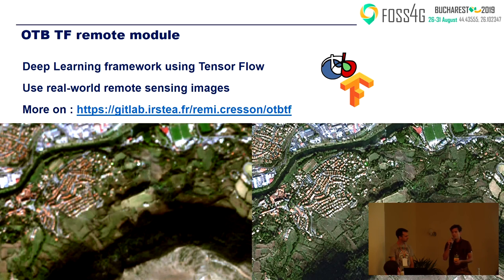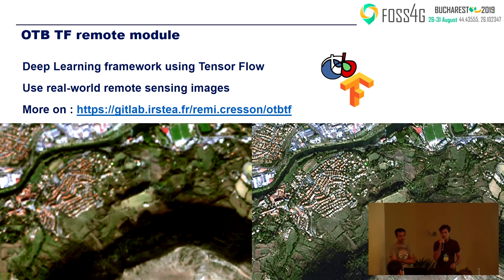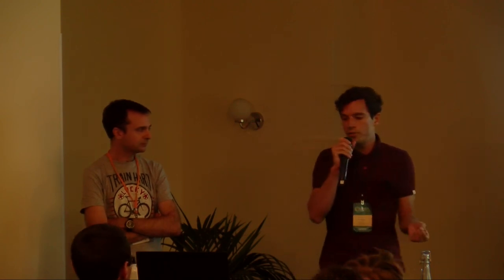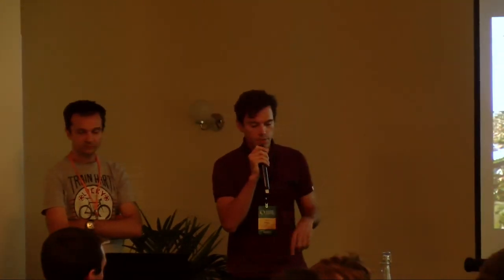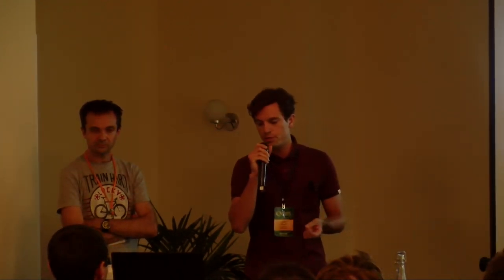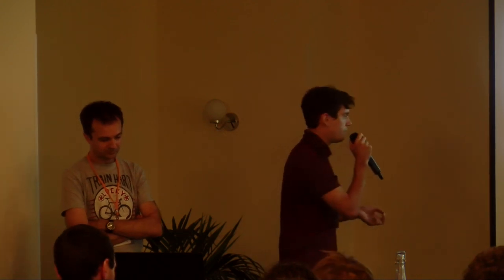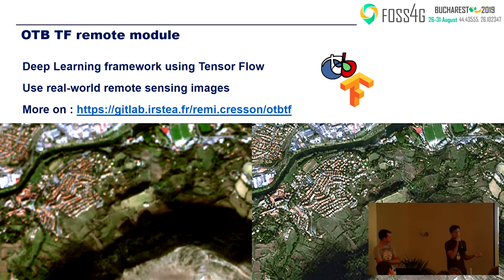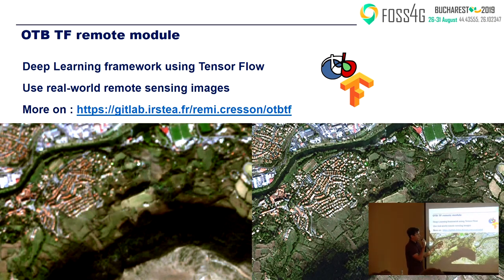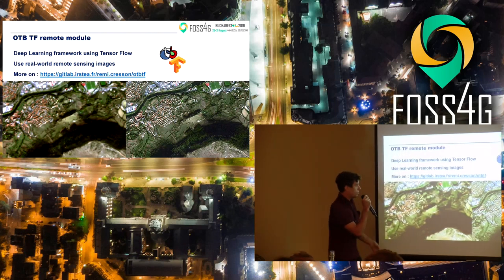This is one example: I developed the UTBTF remote module, which is a kind of generic multi-purpose framework for deep learning on real-world remote sensing images. When you read a scientific paper, people are working on tiny images like postcard stamps, but in real life images are quite big. Here we have an SRGAN — a deep net that transforms a low-resolution image into a high-resolution image. This is a Sentinel-2 image, and this is the same Sentinel-2 image which looks like a Spot 7 image. The image is like a hundred thousand pixels on a side, so it's a big image.